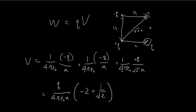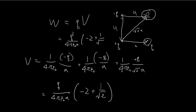We can pull out the common terms to simplify, giving negative two plus one over the square root of two. This is the potential at this point. To find the work done, we multiply by the charge q. So the work done is equal to q squared divided by four pi epsilon A, times the quantity negative two plus one over the square root of two. This is the answer to part A.